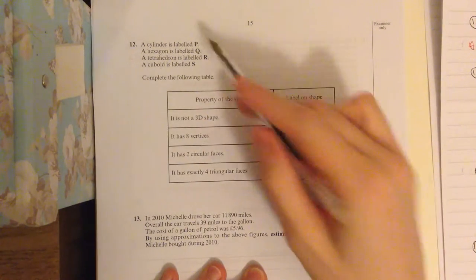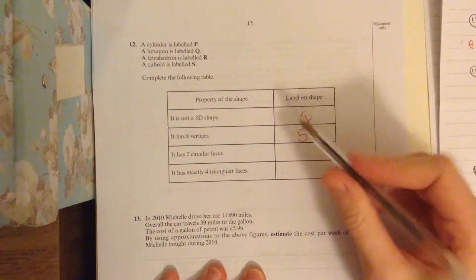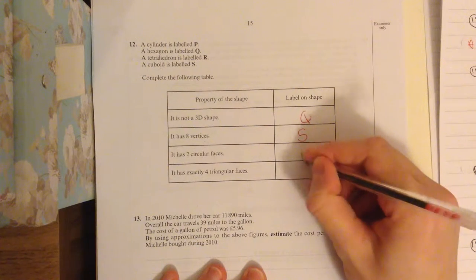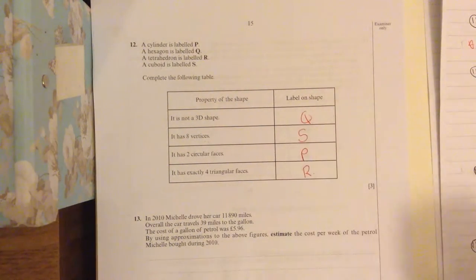It has two circular faces. That would be a cylinder because that one has two circular faces. It's a 3D shape. And the last one has exactly four triangular faces. That's going to be a tetrahedron.